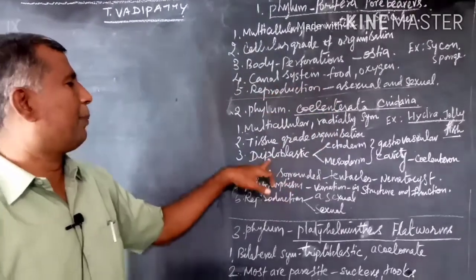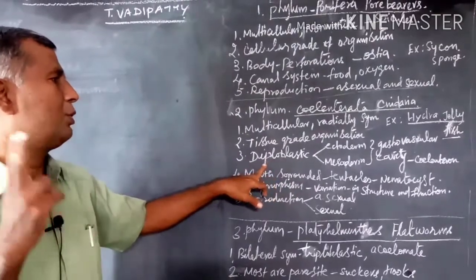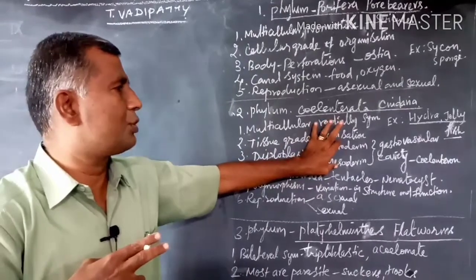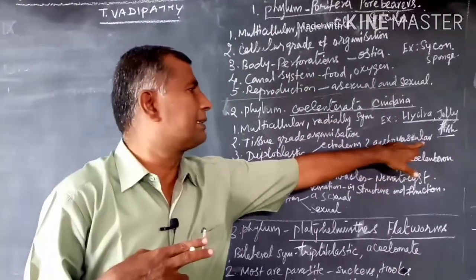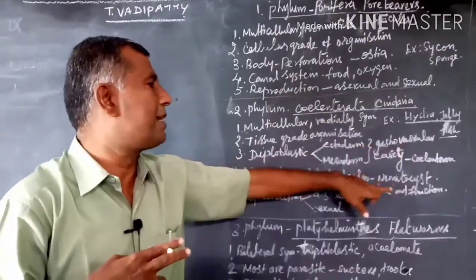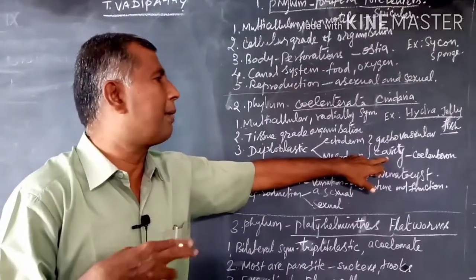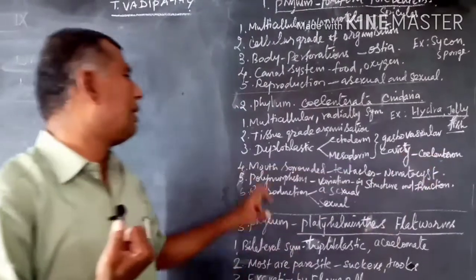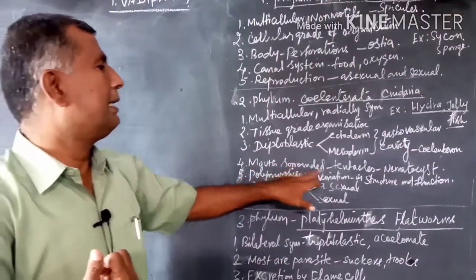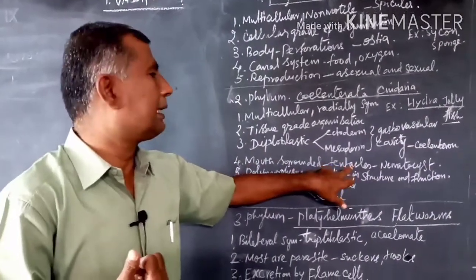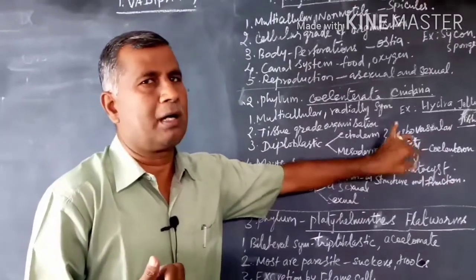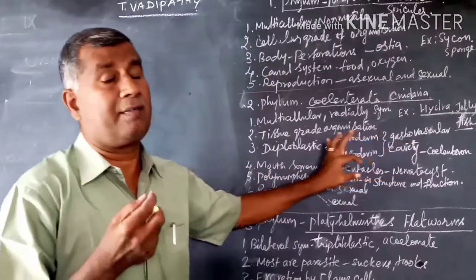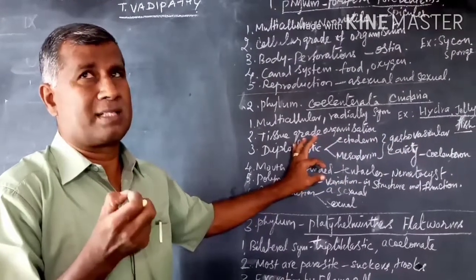They are diploblastic, having two germ layers: ectoderm and endoderm. Between these two there is a cavity called the gastrovascular cavity, made up of coelom. That is why the name Coelenterata. The mouth is surrounded by tentacles. The tentacles bear the nematocysts or cnidoblasts, stinging cells, which contain poisonous substances.